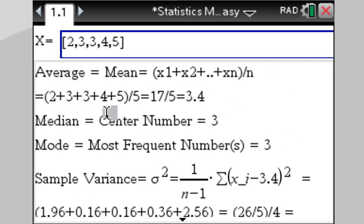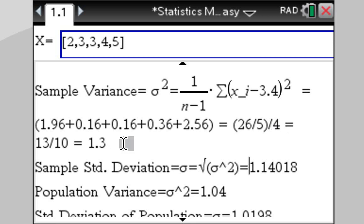Scroll up. Average mean is 3.4. Median is 3. Mode is also 3. Variance is computed here as 1.3, and the standard deviation, which is just the square root of 1.3, is 1.14.